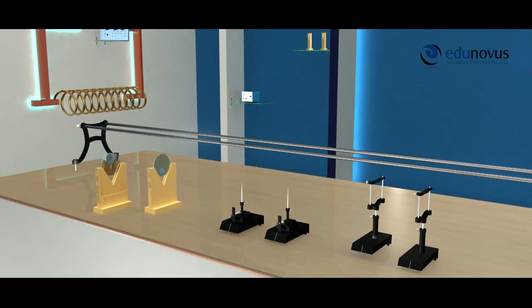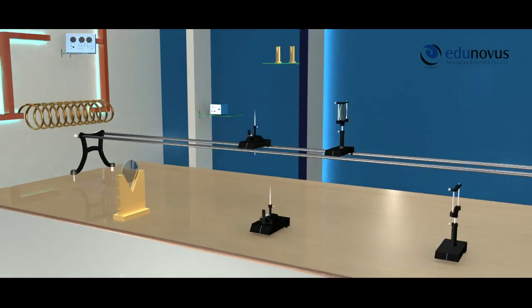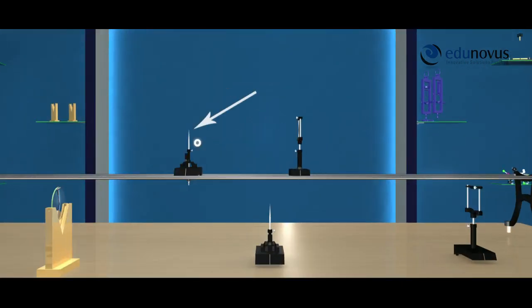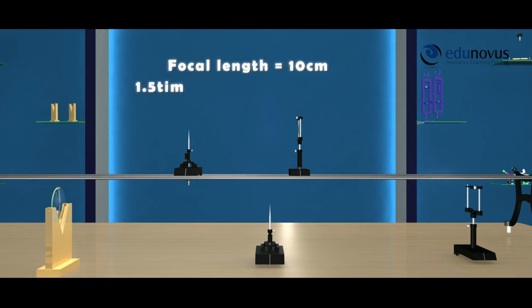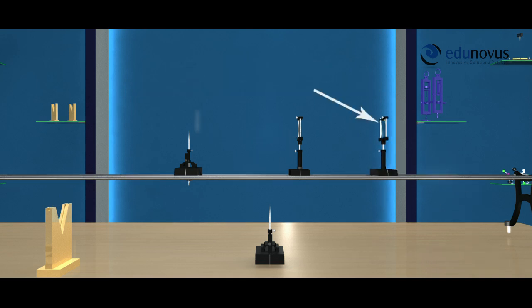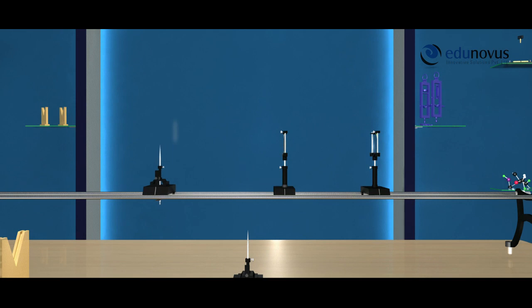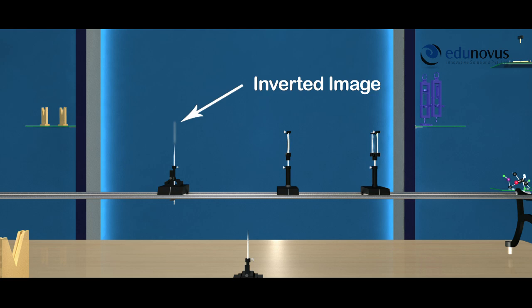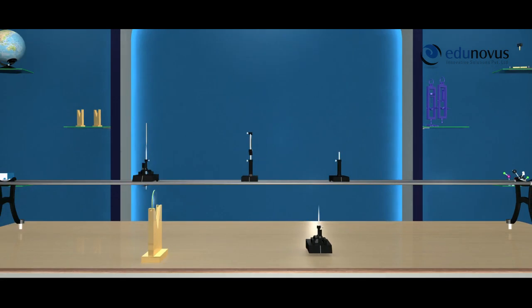Consider a convex lens and mount it on the optical bench. Now place the object needle at a distance of 1.5 times the rough focal length of the given convex lens. Then mount the convex mirror on the right side of the lens. By adjusting the positions of the uprights, you will observe an inverted image of the object needle. Now, if we remove the convex mirror, the light rays from the needle will meet at the center of curvature of the convex mirror.